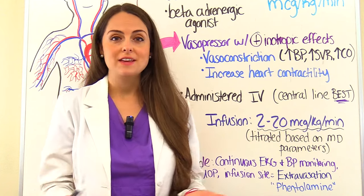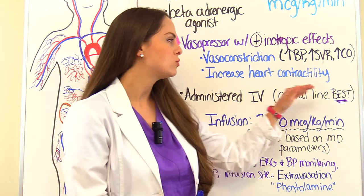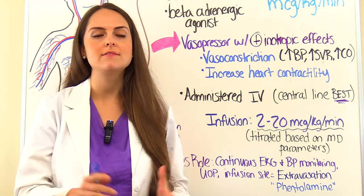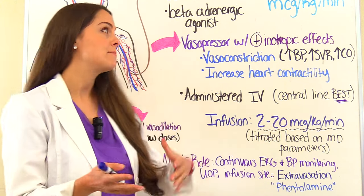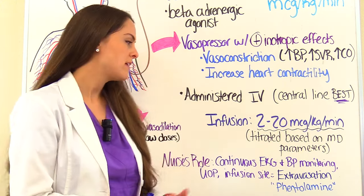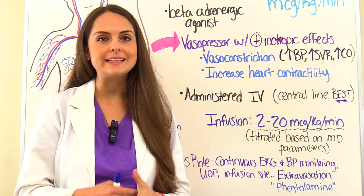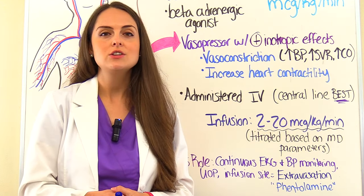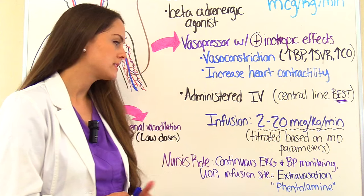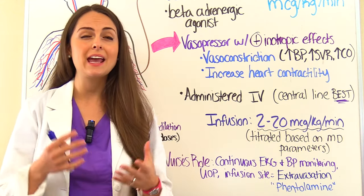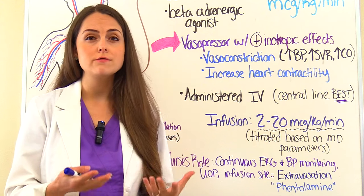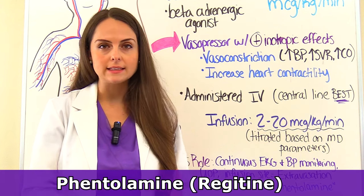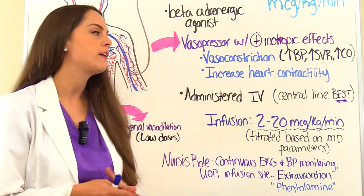Dopamine is administered IV and it's best given through a central line, rather than the basic IV cannula route. Dopamine is a major vasoconstrictor, so if extravasation occurs — where dopamine accidentally leaks into the surrounding tissue — it can lead to tissue ischemia and necrosis. As a nurse you've really got to watch that infusion site. If this does occur, you can give phentolamine, which causes vasodilation, to help reverse those vasoconstrictive effects.